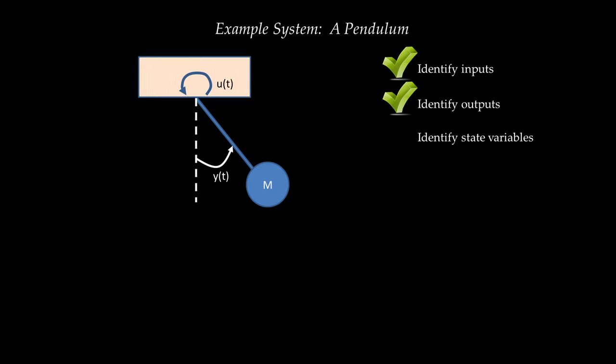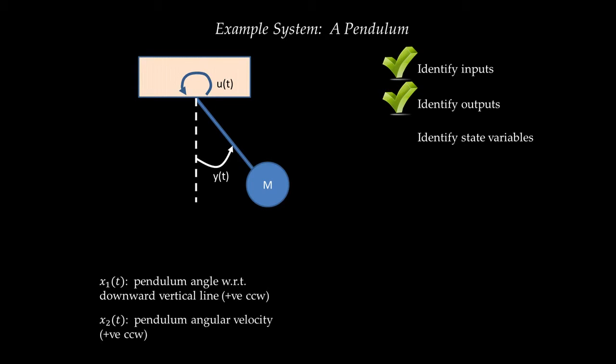The potential energy is a function of the angle of the pendulum relative to the vertical, and the kinetic energy is a function of the angular velocity of the pendulum. So it makes sense to make the state variables: number one, the angular position of the pendulum with respect to the downward vertical line, positive counterclockwise; and number two, the angular velocity of the pendulum, also positive counterclockwise. We've now identified the state variables and completed step three.